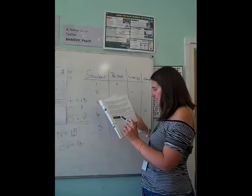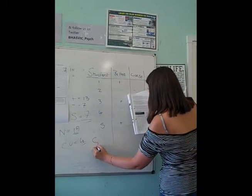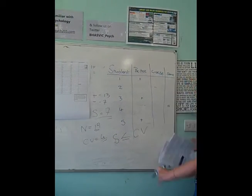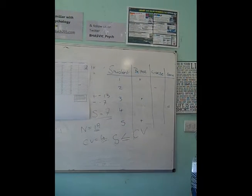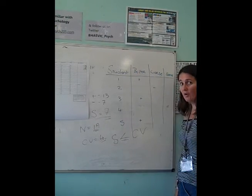But if you have a look at your table, it says value of S must be less than or equal to the critical value for it to be significant. So look, is 7 less than or equal to 4?